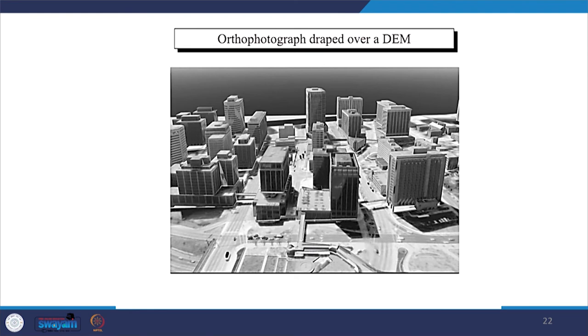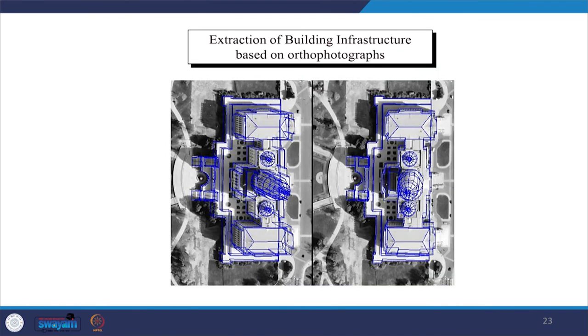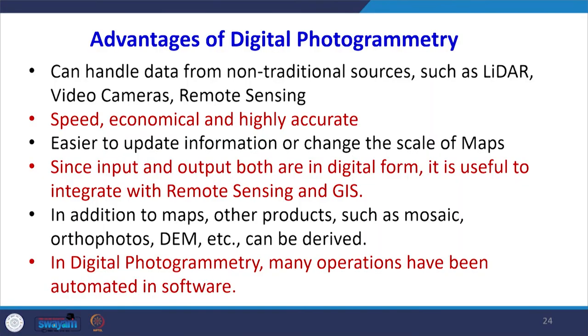Orthophotographs draped on the digital elevation model allow one to feel the exact height of buildings. Building footprints and other features such as pathways can be extracted from orthophotographs. Advantages of digital photogrammetry include: the ability to handle data from non-traditional sources such as LADAR data, video cameras, remote sensing data, and satellite data; speed; economy; and accuracy. These are the best advantages of having data in digital form, whether from photogrammetry or any other source.